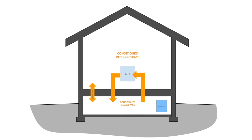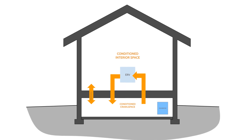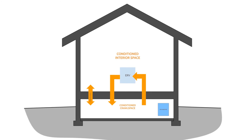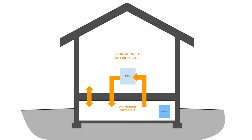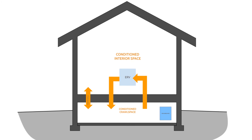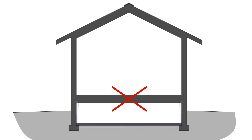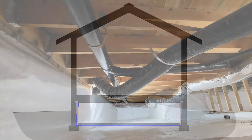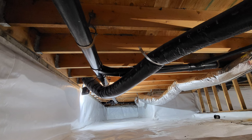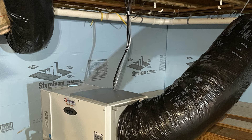A conditioned crawl space is part of the conditioned space. It receives fresh air and exhausts stale air, and it's pressure balanced with the interior living space with transfer grills or another strategy to reduce the chances of a negatively pressurized space. A conditioned crawl space is essentially a short basement and has to be treated like one — we aren't introducing any unconditioned outside air. Conditioned crawl spaces are insulated not at the floor level but rather at the exterior stem walls and at the rim joists, with supply and return ducts, transfer grills, or another means of air circulation provided within the space.